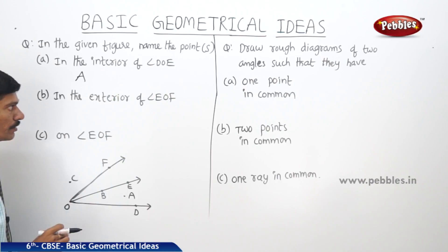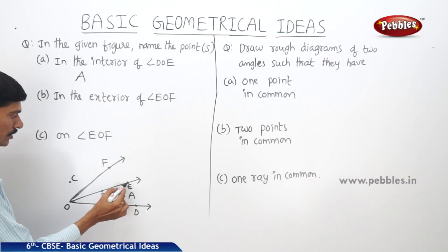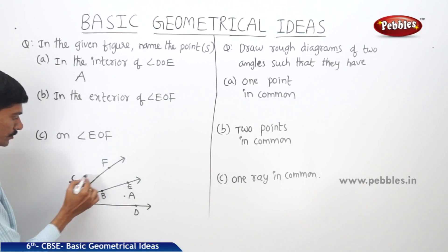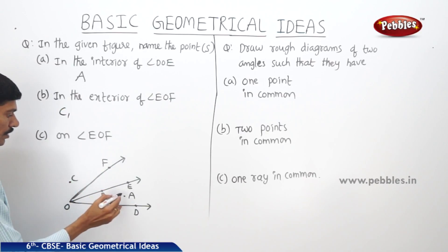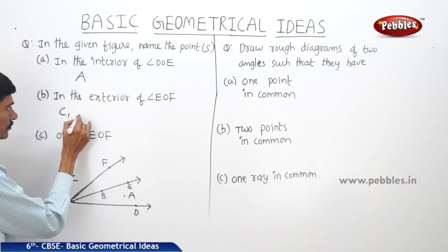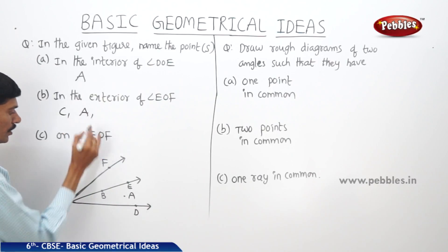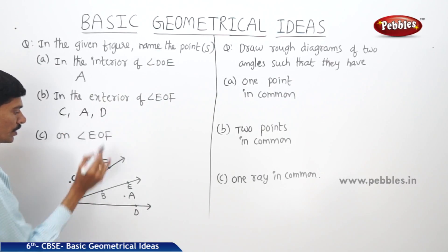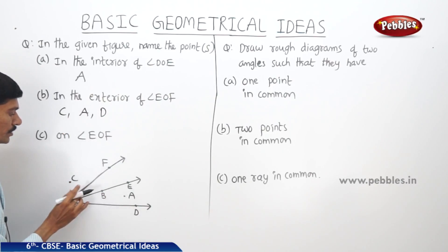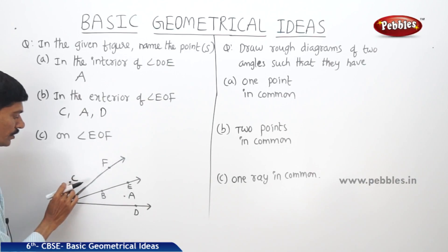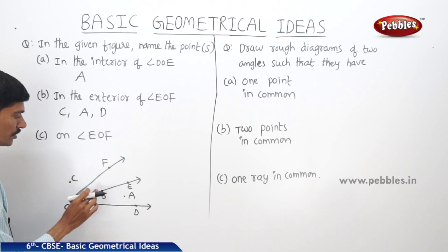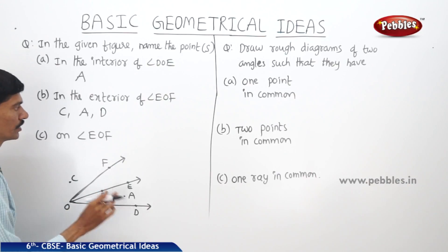Next, in the exterior of angle EOF. The exterior of angle EOF has point C, point A, and also point D. So these are the three points in the exterior of angle EOF: C, A, D.